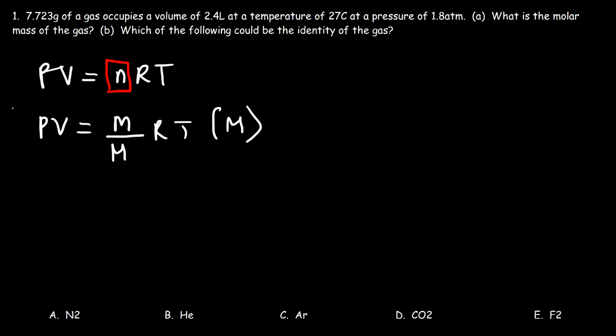Next, I'm going to multiply both sides by the molar mass. So on the right side, M will cancel. So I have pressure times the volume times the molar mass is equal to MRT. You could put MW for molecular weight if you want to, to distinguish it from molarity. But just know that in this equation, it represents the molar mass.